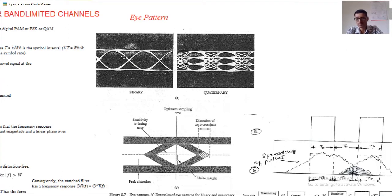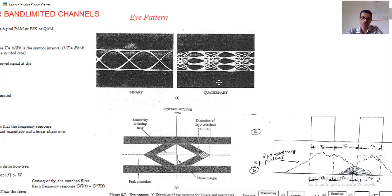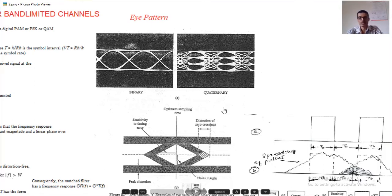For a binary case there is only one eye within each interval. For a quaternary case — M = 4 — there are three eye patterns. So for binary there is 1 eye, and for quaternary there are 3 eye patterns.